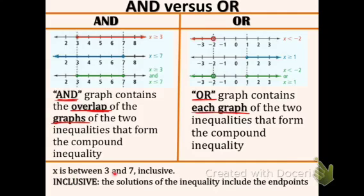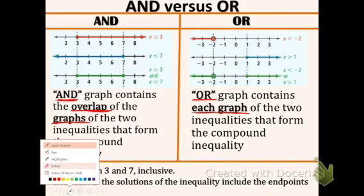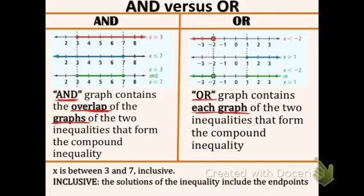And the last part down here, X is between three and seven inclusive. We need to figure out what the word inclusive means. Inclusive means that the solutions of the inequality include the endpoints. That's the major word right there, include. You can see include is actually in the word inclusive. So the solutions include the endpoints wherever the inequality starts and ends.